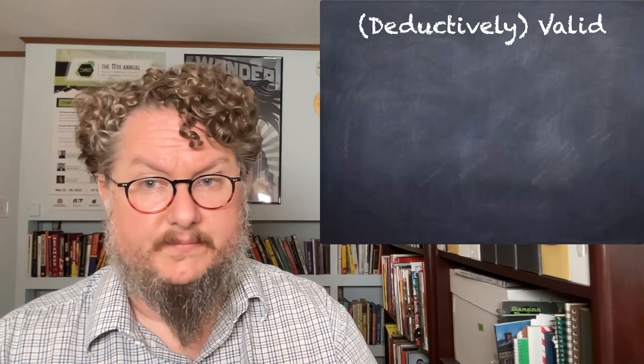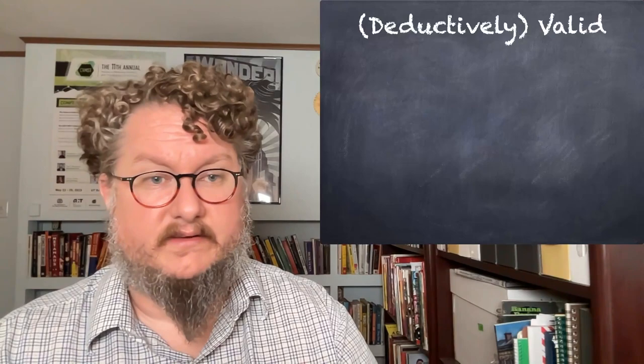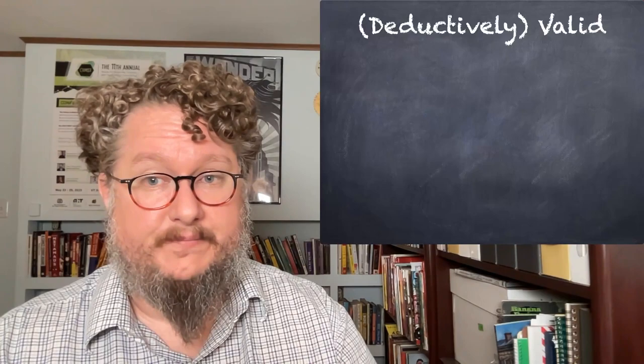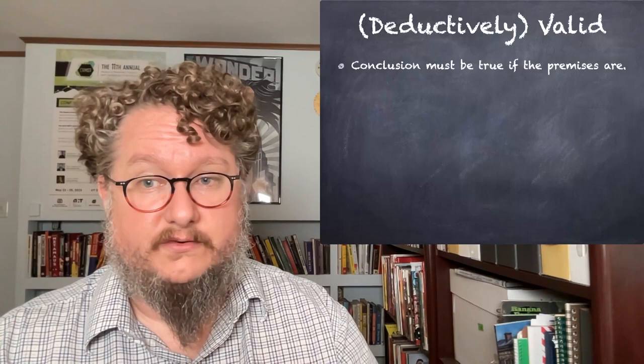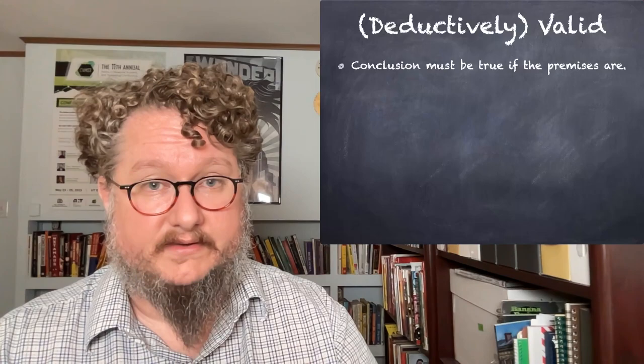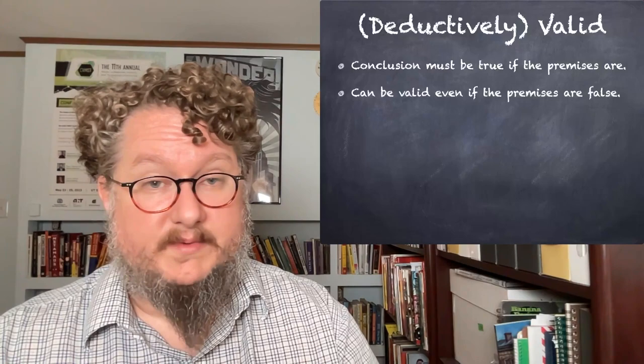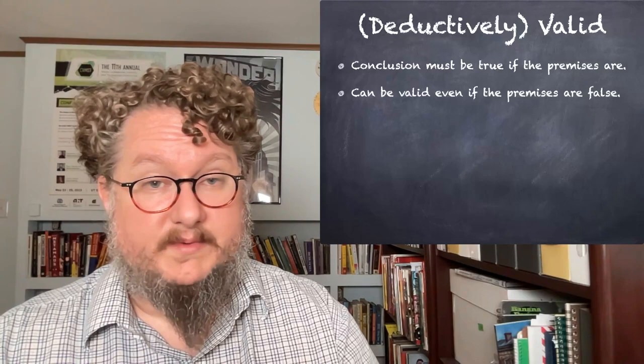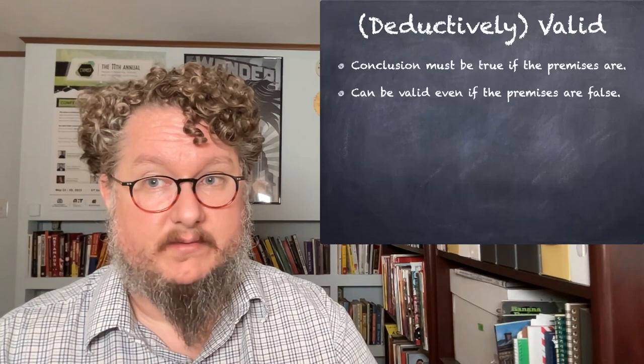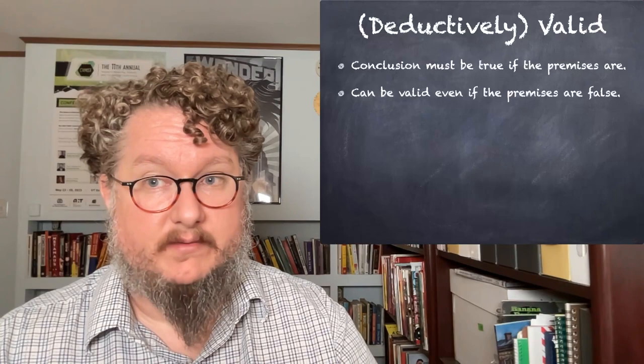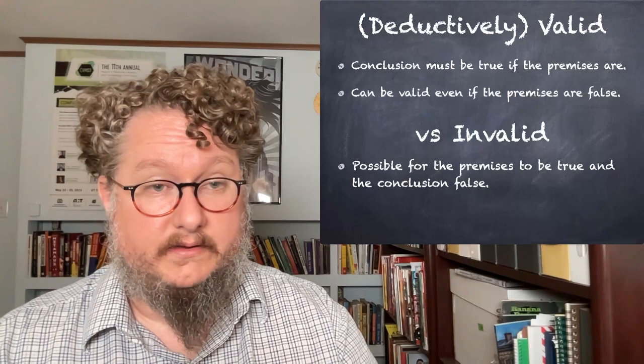Next I want to talk about validity — our key way of analyzing arguments. When we talk about what's valid, we mean deductively valid. An argument is valid if the conclusion must be true if the premises are. An argument can be valid even if the premises are false — what we're interested in is what would happen if the premises were true. By contrast, an argument is invalid if it is possible for the premises to be true and the conclusion to be false.